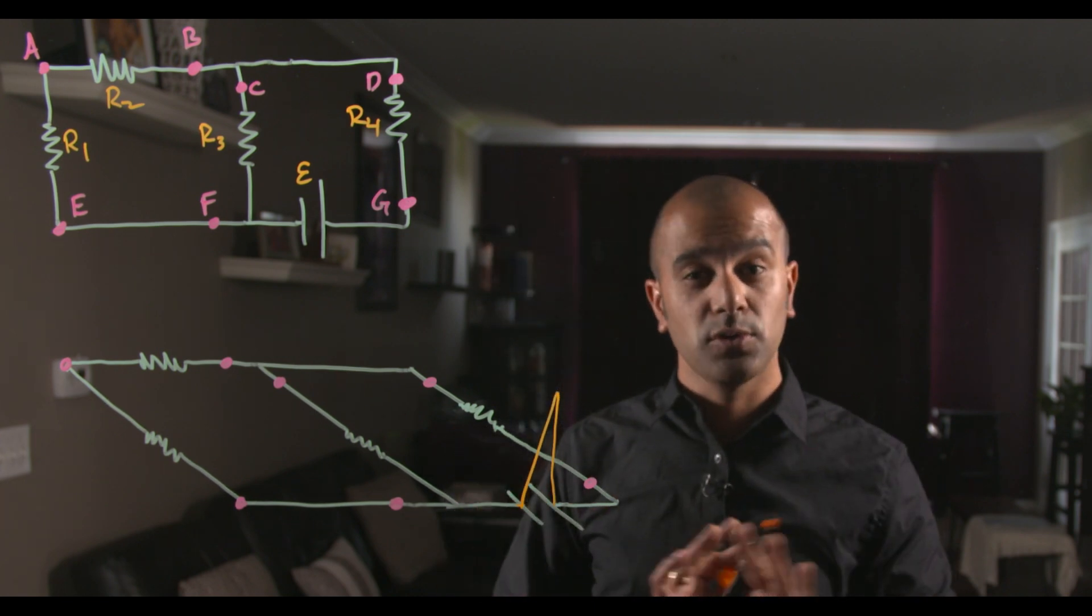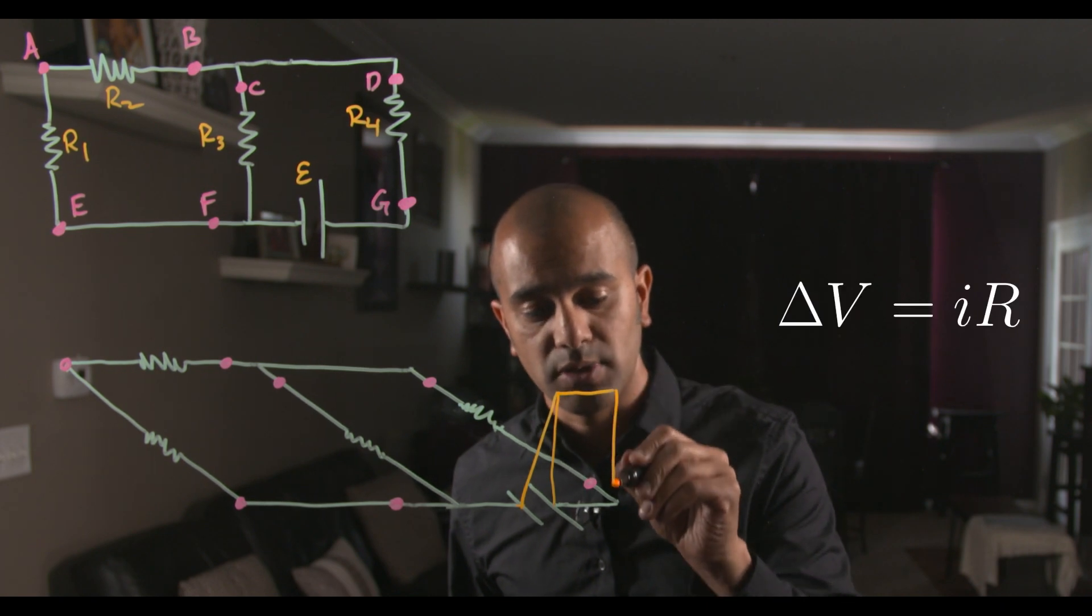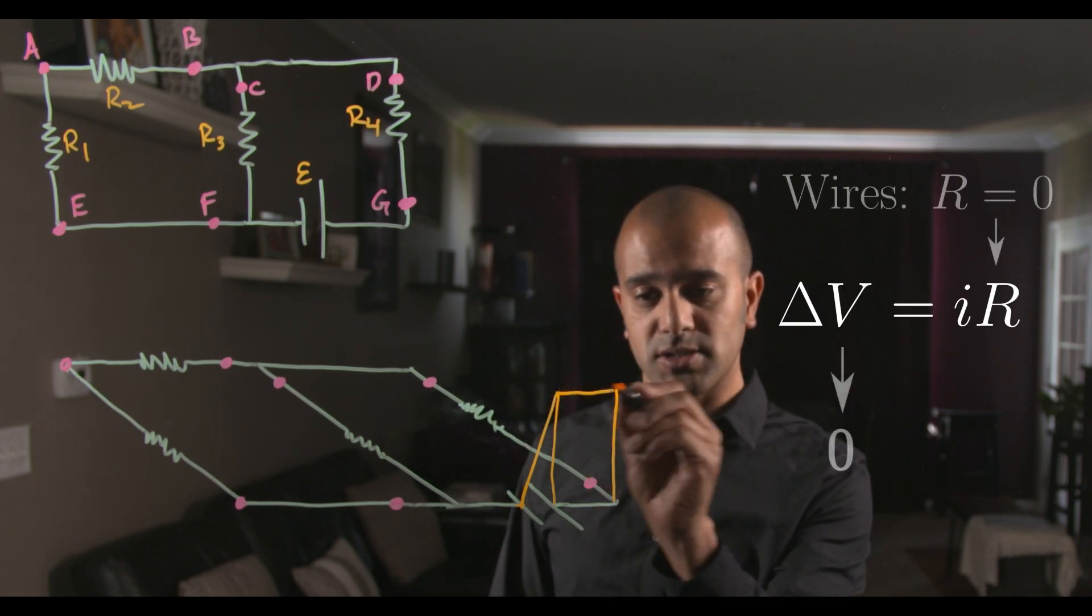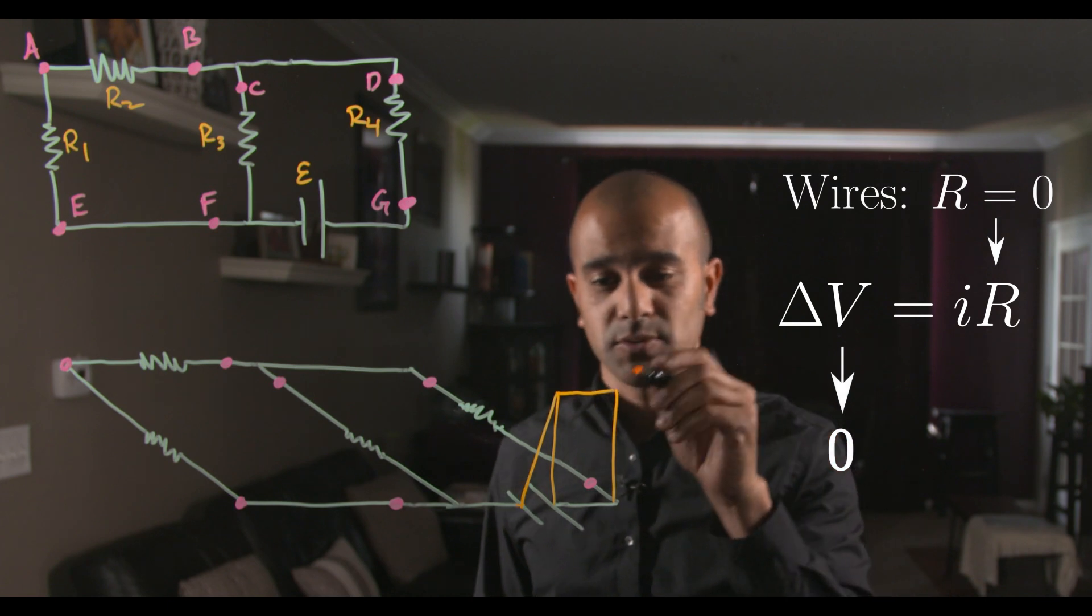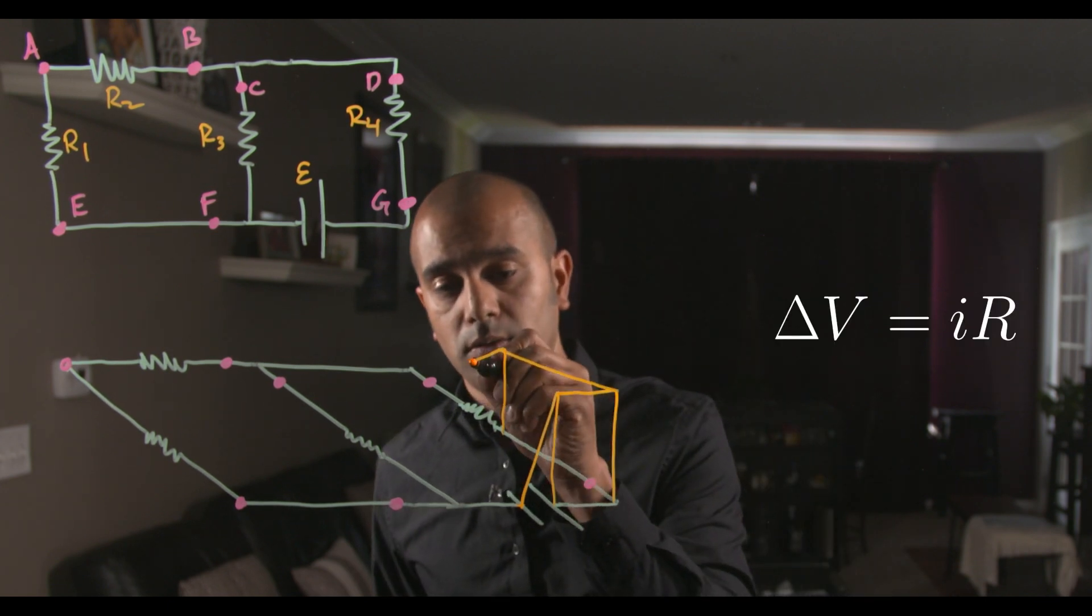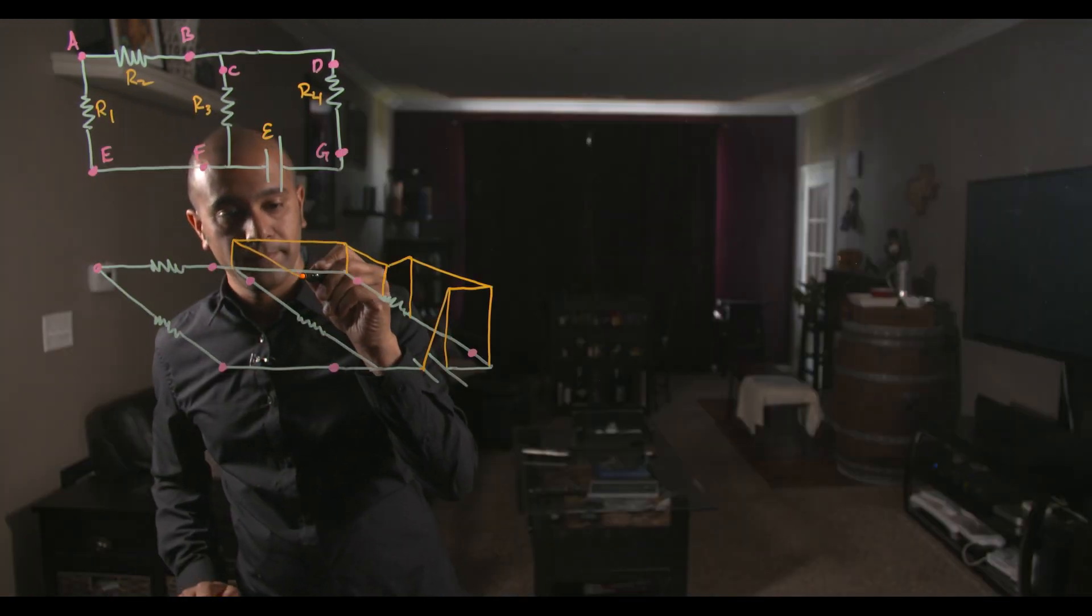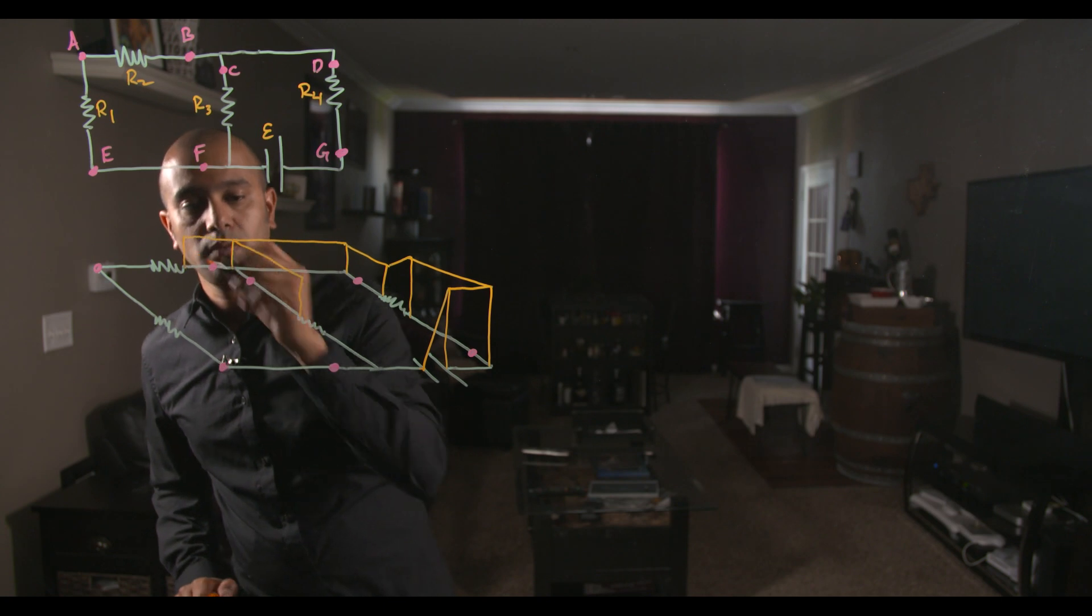Across each wire the voltage will not change. Voltages or potentials do not change across wires so I'm just going to draw it straight there. In other words, the height of this is the same as we walk around across the wires. Now when we get to resistors the potential will drop a little bit. Along the wires the potential is not changing so when I go along this wire I need to have the same height on this vertical wall here.